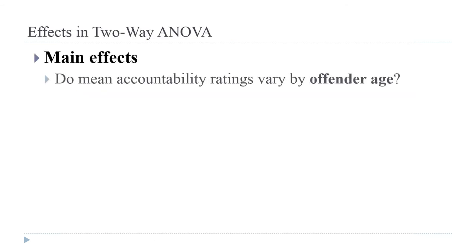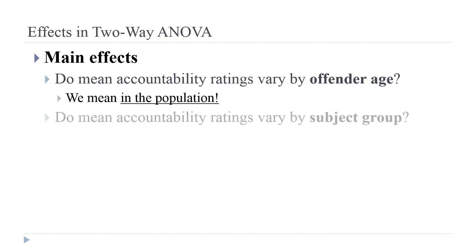The main effect of offender age asks: do the mean accountability ratings vary by offender age? The hypothesis is exactly the same as for a one-way analysis of variance. The null hypothesis is that the true means for the different offender ages are not different; the alternative is that there is variability among those means. The main effect of subject group asks whether, in the population, true mean accountability ratings vary between the APA, ATSA, and undergrad groups.